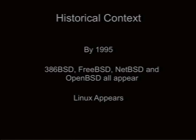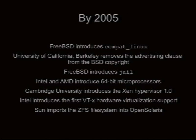By 1995, that motivation from AT&T brought the familiar BSDs to the forefront, most of which are based on 386BSD from Jolitz. And something called Linux came on the scene. By 2005, the newly liberated BSDs were starting to introduce new features such as FreeBSD's compat Linux. The license was further unencumbered by removing the advertising clause, and FreeBSD introduced JAIL. We started to see 64-bit architectures we could all afford. Xen came along, and Intel and AMD hardware acceleration came along for virtualization. Sun brought ZFS to the world.